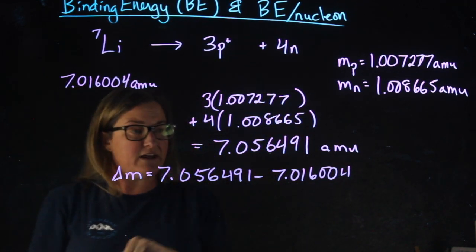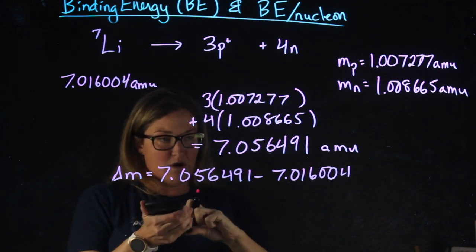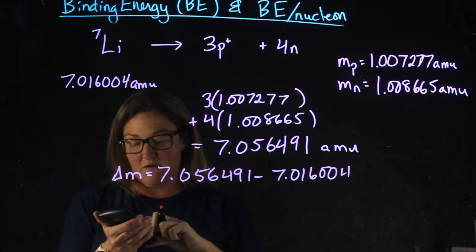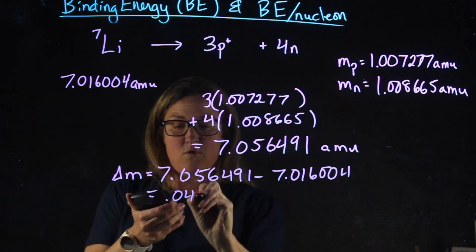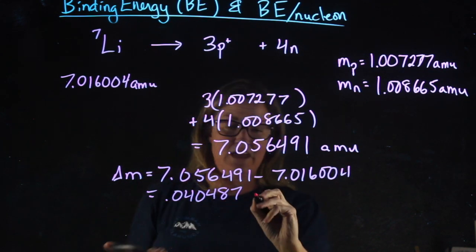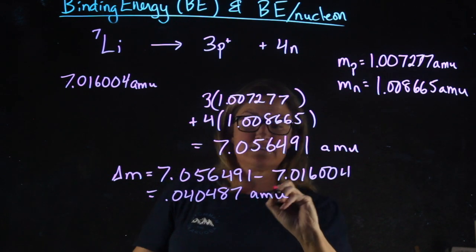So the answer I have in my calculator, minus 7.016004, gives me a change in mass of 0.040487 atomic mass units.